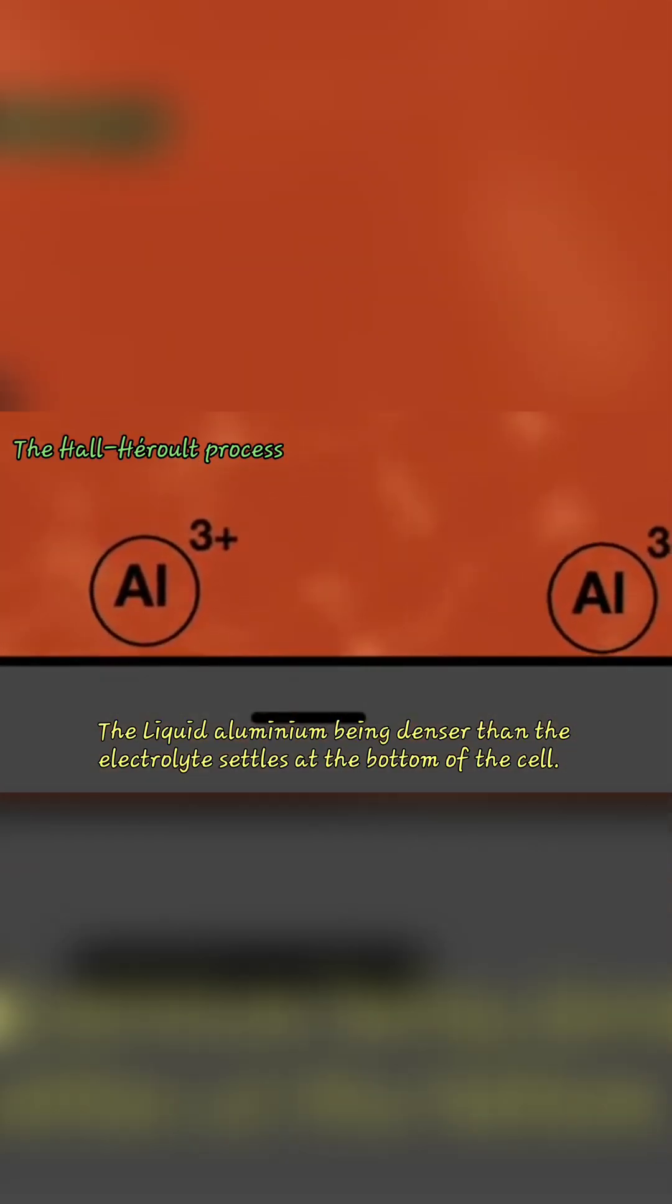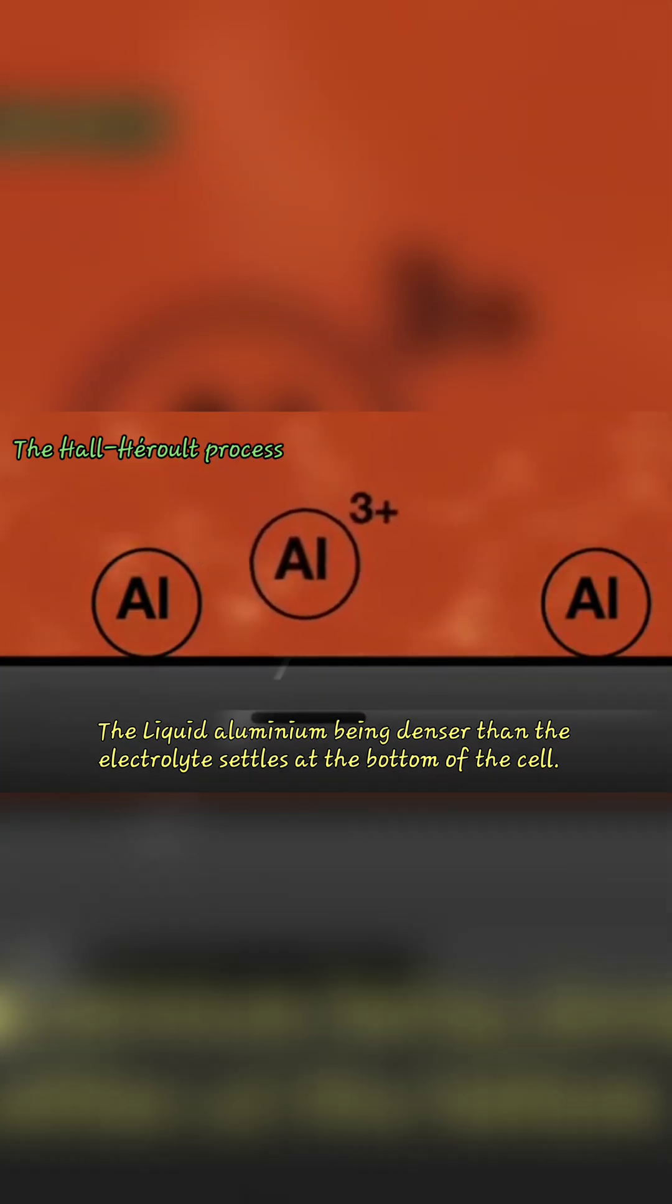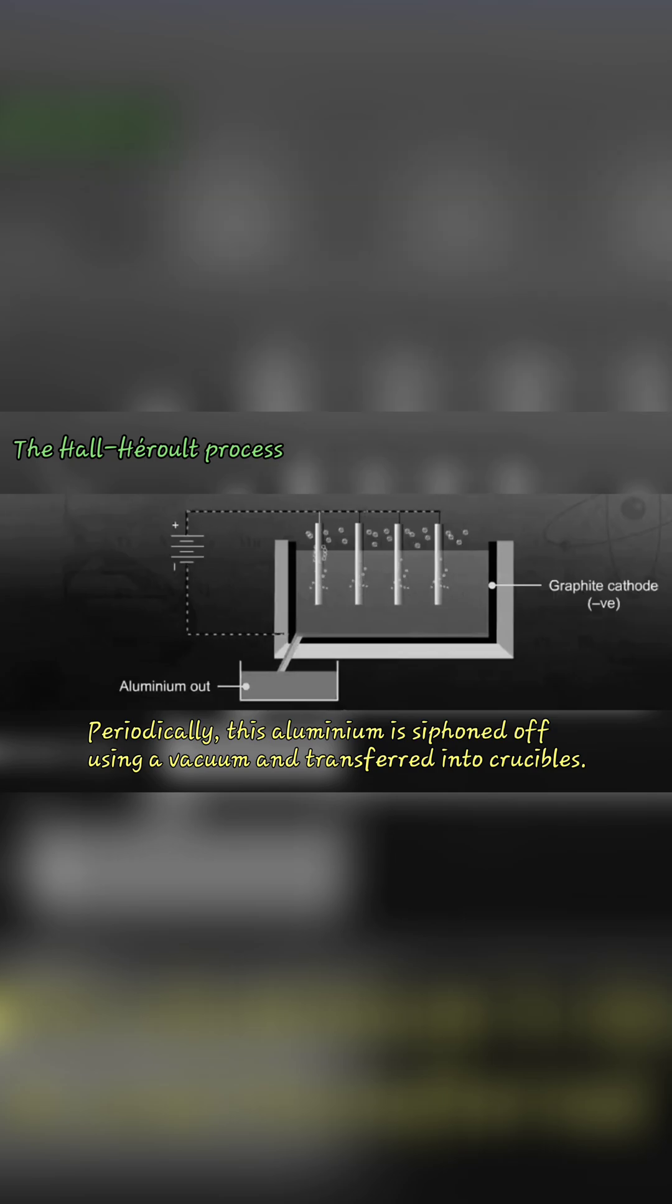The liquid aluminium, being denser than the electrolyte, settles at the bottom of the cell. Periodically, this aluminium is siphoned off using a vacuum and transferred into crucibles.